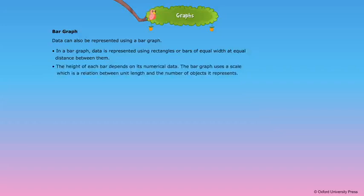The bar graph uses a scale, which is a relation between unit length and the number of objects it represents. The horizontal axis is known as x-axis and the vertical axis is known as the y-axis.